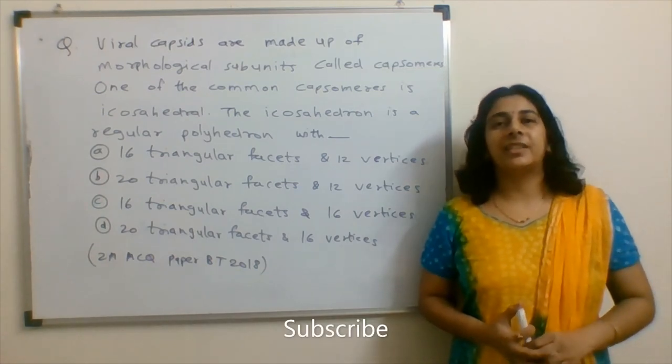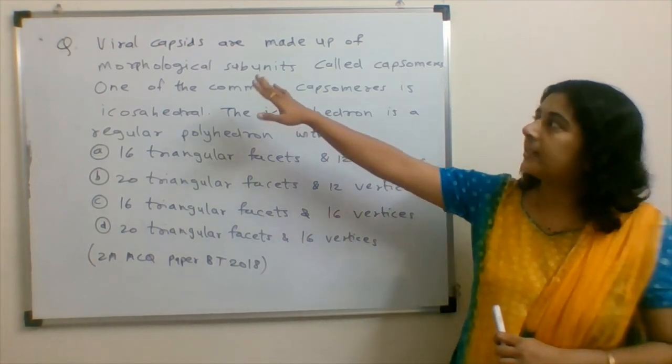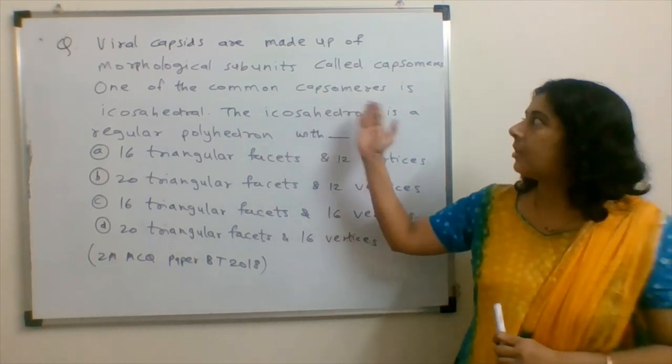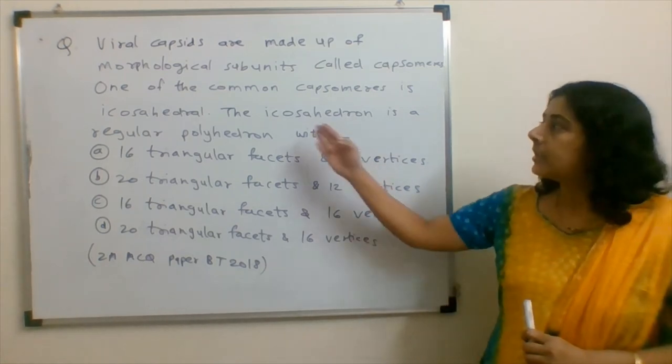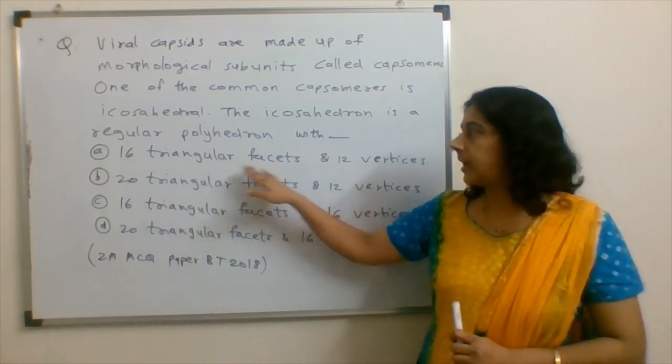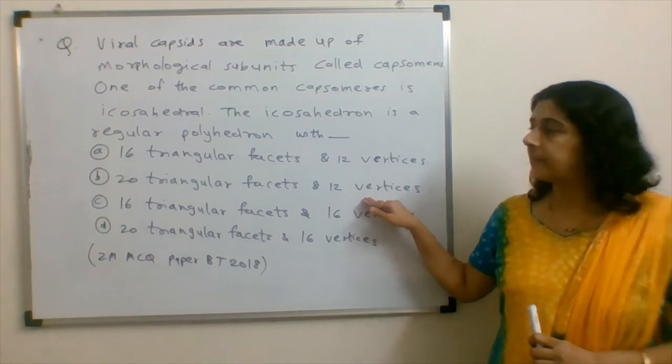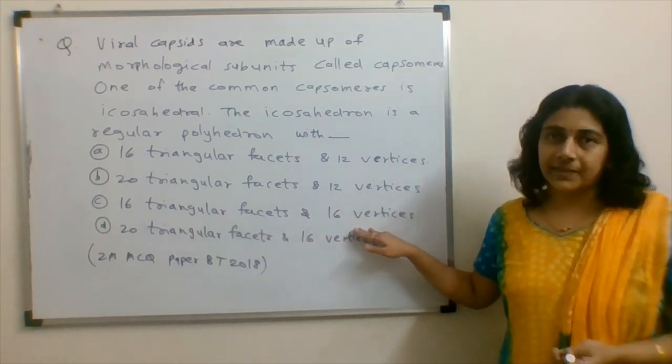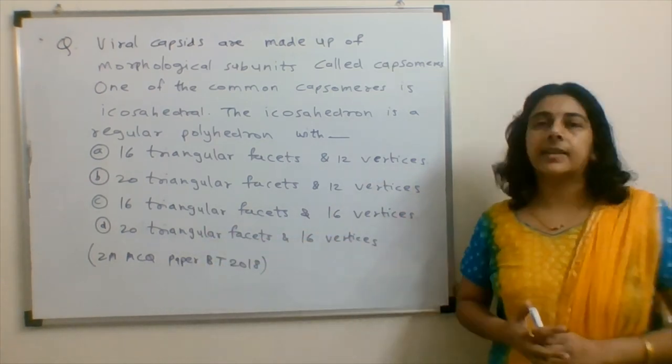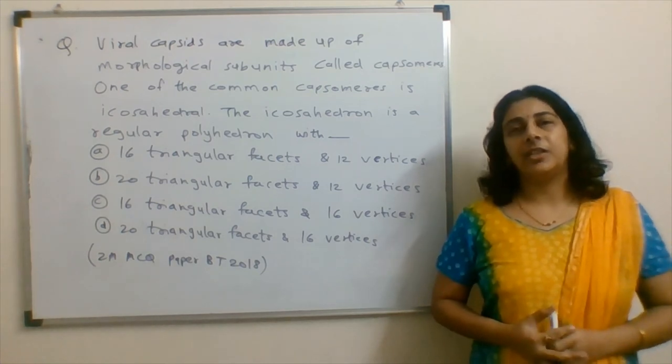So let's have a question for my next video. This is a question from microbiology, virus section. Viral capsids are made up of morphological subunits called capsomers. One of the common capsomers is icosahedron. The icosahedron is a regular polyhedron with 16 triangular facets and 12 vertices, 20 triangular facets and 12 vertices, or 16 triangular facets and 16 vertices. This is a 2 mark MCQ type of question from paper of biotechnology 2018.